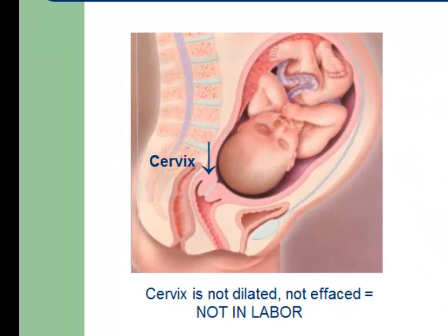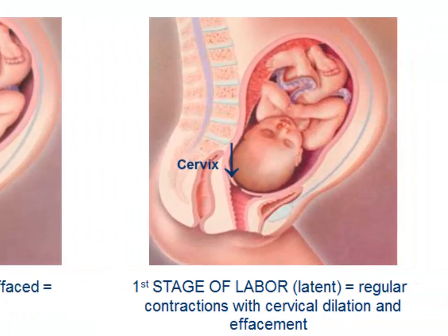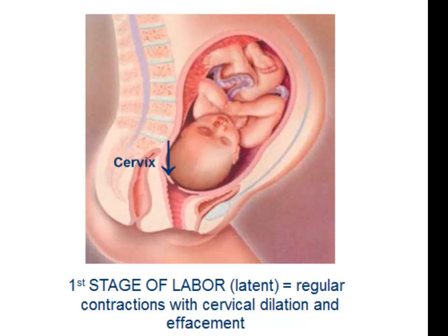These two illustrations of a pregnancy show the cervix below the fetal head. On the left, the cervix is closed and thick — even if contractions are present, there has been no cervical change, so this patient is not yet in labor. On the right, the cervix is dilated a little bit and is very much thinned out. This dilation and thinning represent cervical change, so this patient is in labor if regular contractions are present.